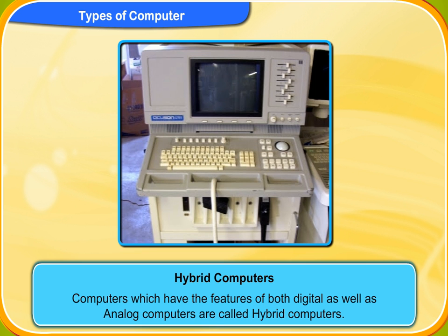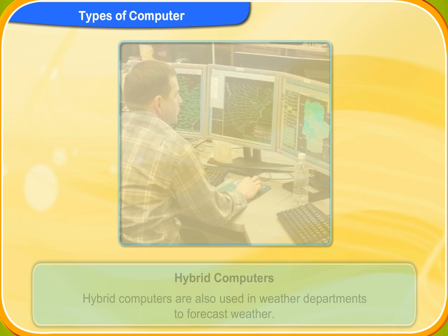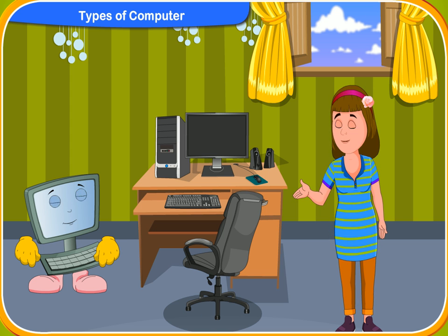Hybrid computers: computers which have the features of both digital as well as analog computers are called hybrid computers. These computers are mainly used in hospitals. With the help of the analog features in the computer, the patient's heartbeat and blood pressure is checked. Its digital features are used to observe the vital signs. Hybrid computers are also used in weather departments to forecast weather.